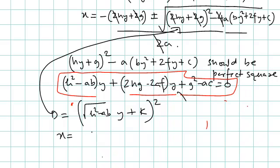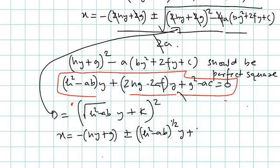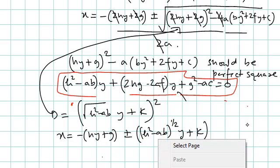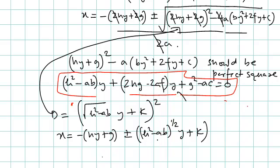When we substitute back, the equation becomes x equal to minus h·y plus g, equal to plus or minus root of (h² minus ab) times y plus k. This represents the equation of two lines — a pair of lines — because we are able to factorize in terms of linear factors. This should represent a pair of parallel lines when the slopes are the same, which happens when we don't have this plus-or-minus term, meaning there should be no y term.